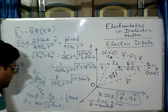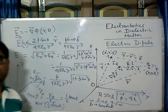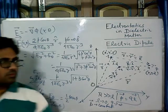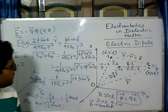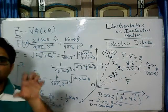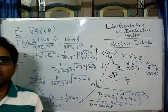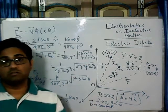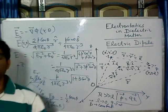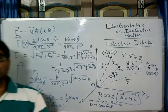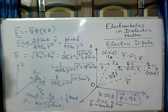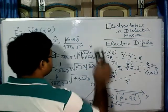The important point we have seen here is that the potential falls with 1 by R squared and the electric field falls with 1 by R cubed — in contrast with a point charge, where the electric field falls with 1 by R squared and potential falls with 1 by R. Now let's see the field lines.